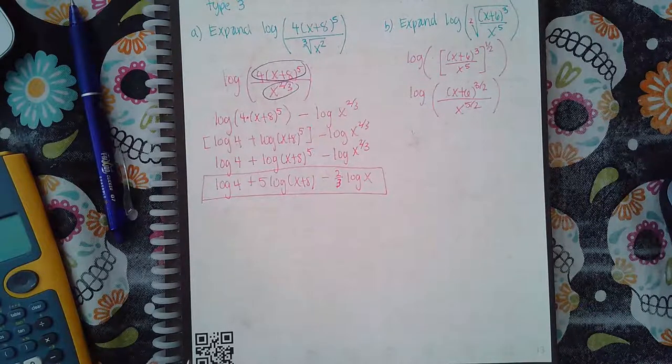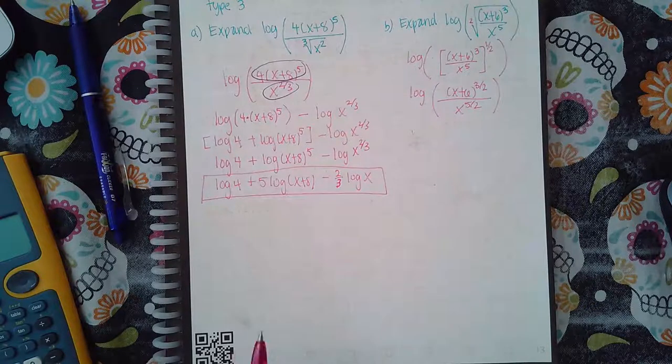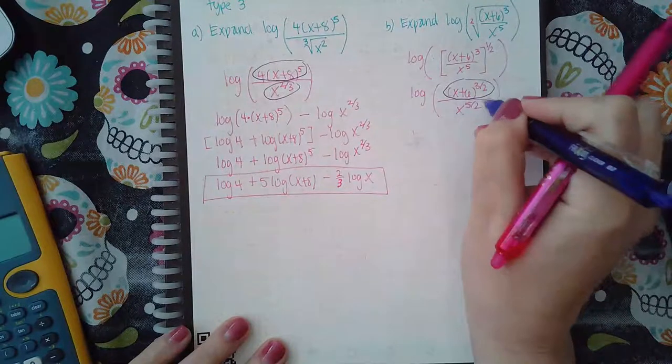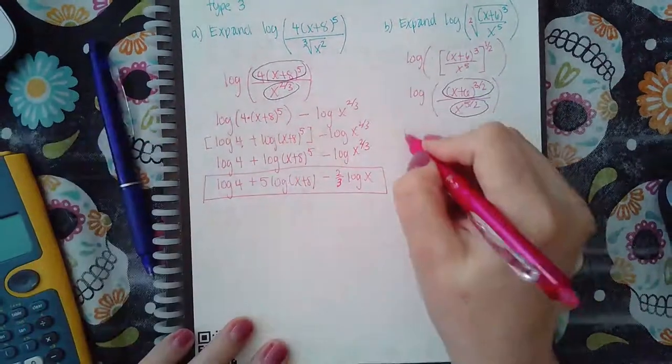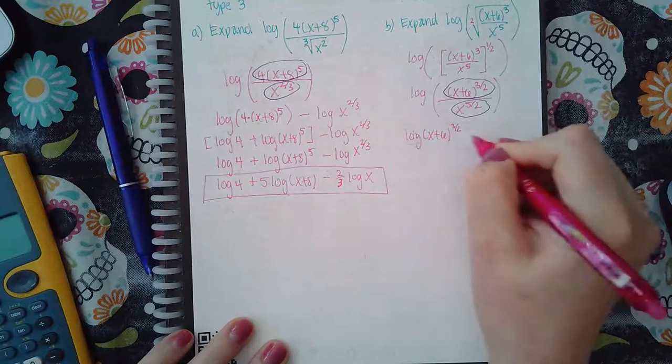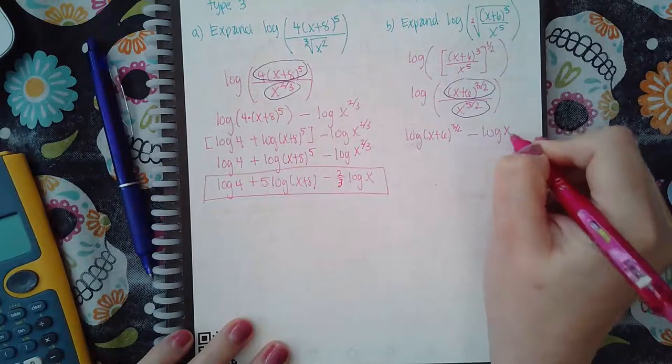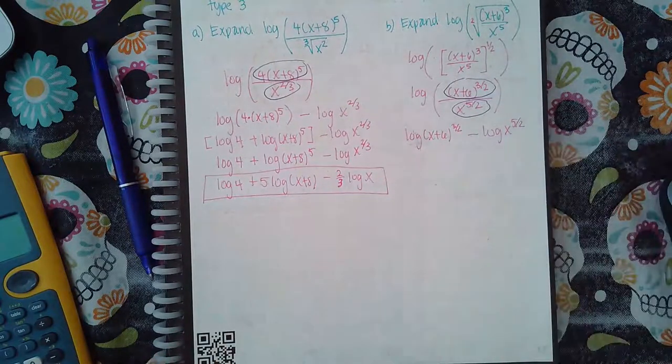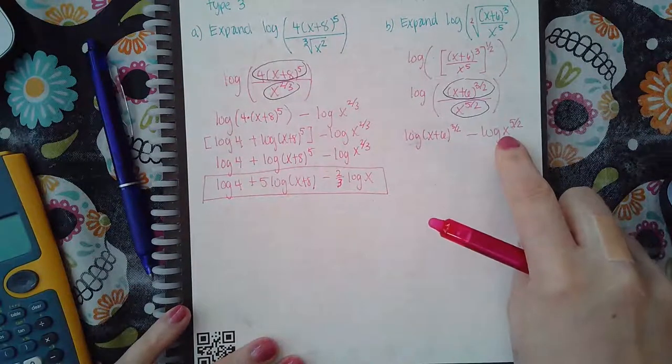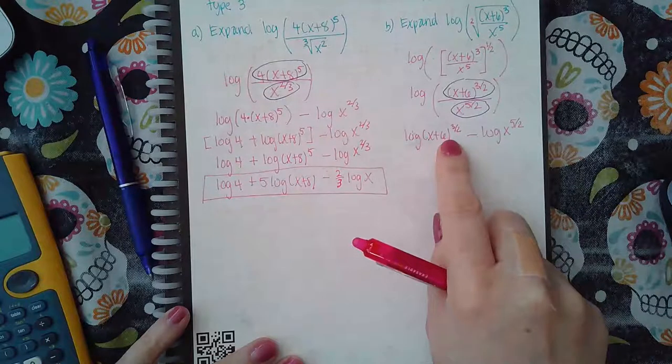I'm going to go straight into my properties now. I'm going to start with the quotient rule so I have to take this numerator and then this denominator. So log of x plus 6 to the three halves minus log of x to the five halves.